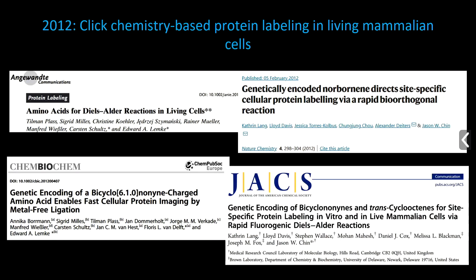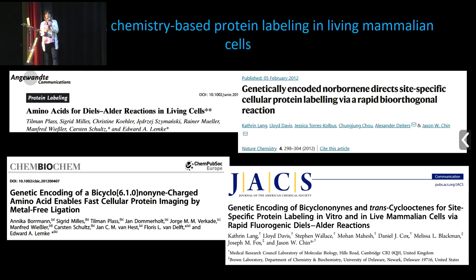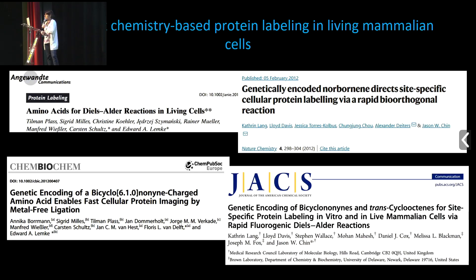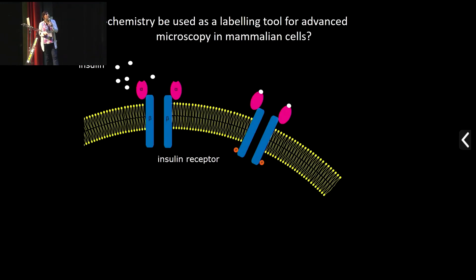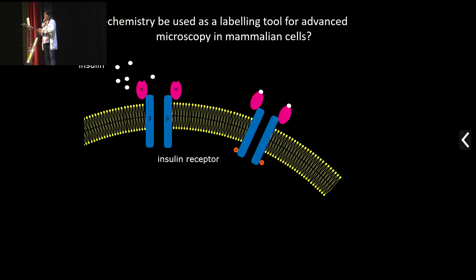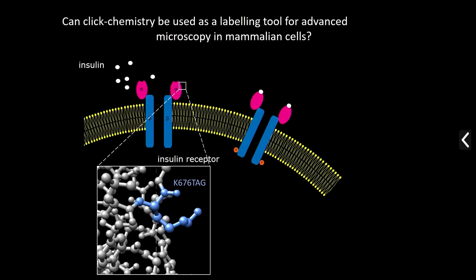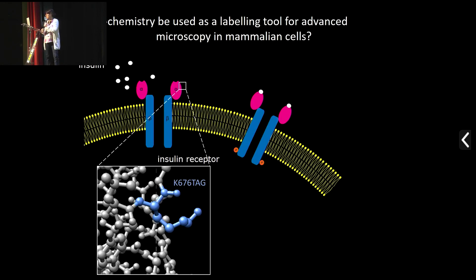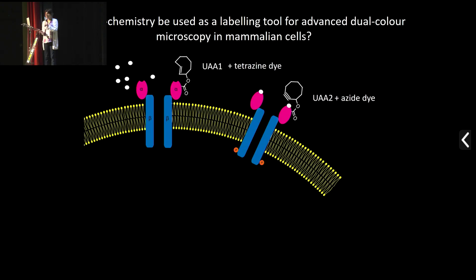In 2012, the first studies showed that unnatural amino acids needed for click chemistry labeling can be incorporated in living mammalian cells. This was done in parallel by Edward Lemke — my postdoc supervisor — and Jason Chin's lab. These proof-of-concept studies showed these amino acids can be incorporated and used for labeling in living cells. When I joined the lab, we wanted to see if we could use this for advanced microscopy in mammalian cells. We were interested in the insulin receptor: we mutated one lysine at the extracellular surface, changing only one amino acid.